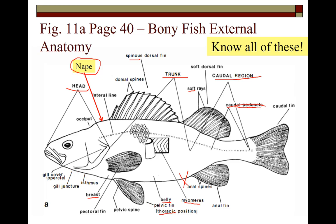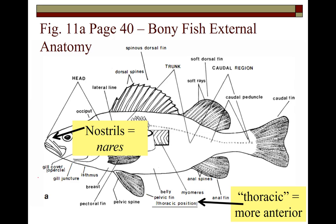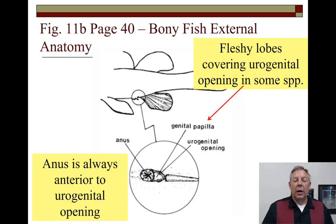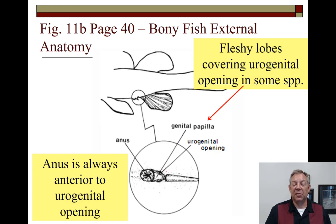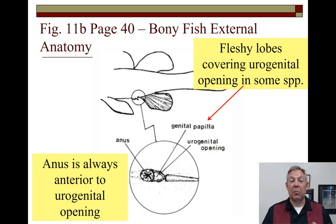The isthmus — like a geographic isthmus — is a narrow point that connects the bottom of the head to the trunk. The gill cover is called the operculum, opercle, or gill cover. The nostrils in fish are called nares. The pelvic fins in the thoracic position is the more anterior position. In both the lamprey and bony fish, there's a urogenital opening. Sometimes fleshy lobes called papilla or genital papilla cover it, which can help identify the fish or its sex. The urogenital opening is a common opening where urine and gametes exit the body.